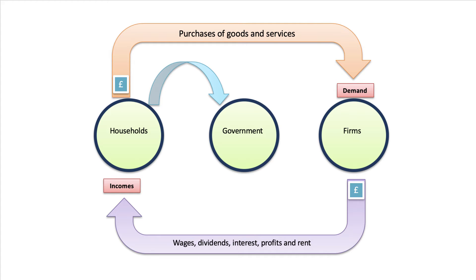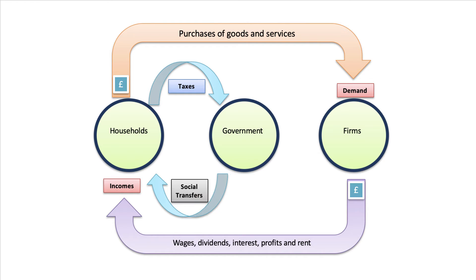Government of course has a big potential role to play in this system. There is a flow from households to government in terms of taxes, particularly direct taxes such as income tax and national insurance. Some of households' gross income goes in direct taxes, taking away from their disposable income.